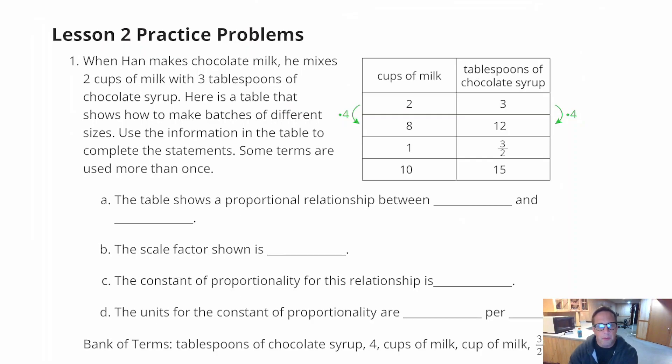For the lesson two practice problems, the first problem is when Han makes chocolate milk, he mixes two cups of milk with three tablespoons of chocolate syrup. Here is a table that shows how to make batches of different sizes. Use the information in the table to complete the statements.